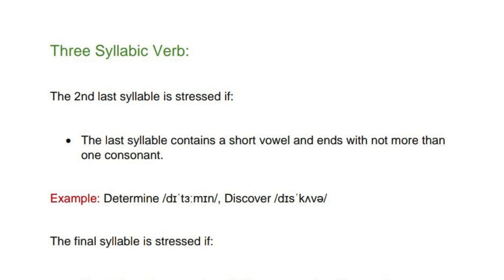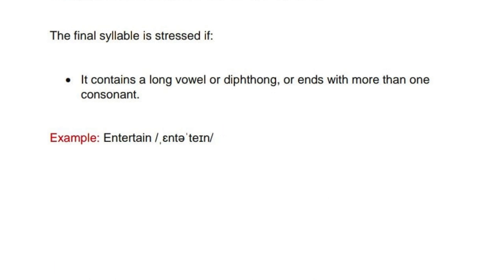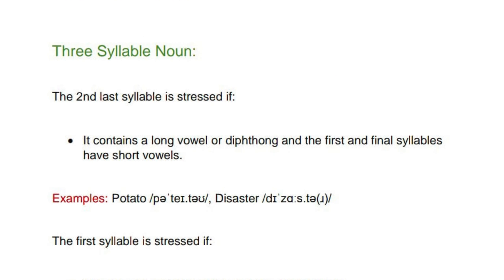Three-syllable verbs: the second-last syllable is stressed if the last syllable contains a short vowel and ends with not more than one consonant — examples: 'determine', 'discover'. The final syllable is stressed if it contains a long vowel or diphthong, or ends with more than one consonant — example: 'entertain'.